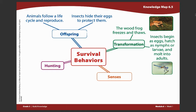We've read two texts this week that give us information about animal behaviors for survival. The first text we read was Frozen Alive — the text about frogs that freeze in the wintertime. Let's work on adding some information to our knowledge map using the information from that text.